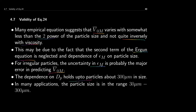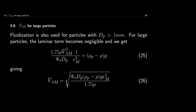The laminar dependence on d_p holds up to particle sizes of about 300 micrometers. In many applications, particles in the range of 30 to 300 microns are used, so for very small particles the flow can safely be considered laminar and Equation 24 can be used. For large particles — typically larger than 1 millimeter — the flow may become turbulent, the laminar term is negligible, and only the turbulent term is used to calculate minimum fluidization velocity.